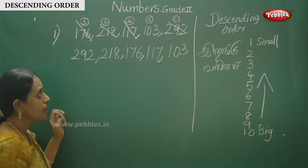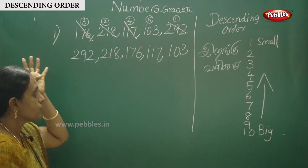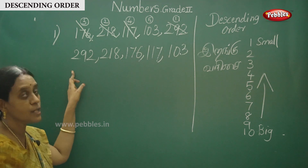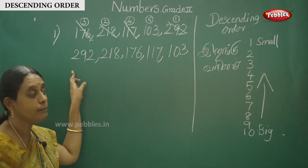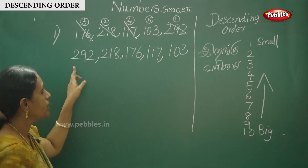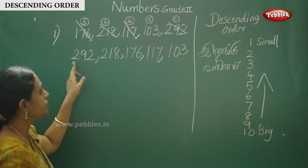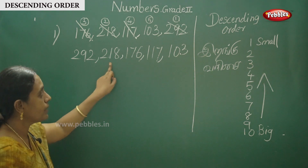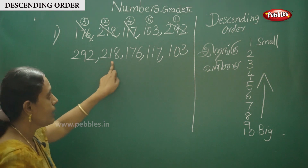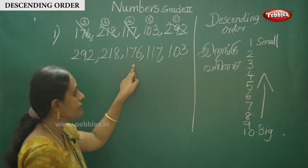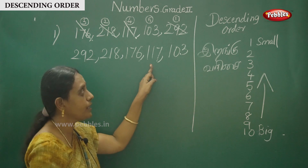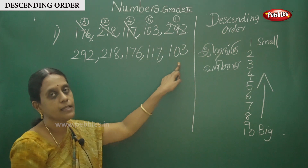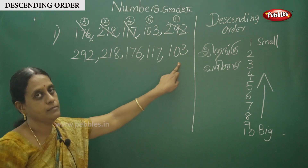Okay, check the answers. Descending order means big to small. So the answer is: 292, 280, 176, 170, and 103.